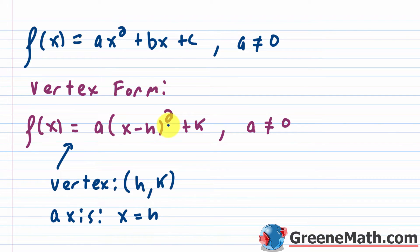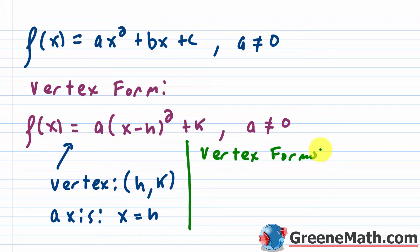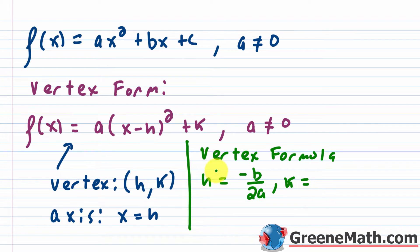Now, how can you go from standard form to vertex form? You can complete the square, but that process is very tedious, so we rely on the vertex formula to do this quickly. With the vertex formula, h is equal to negative b over 2a, and your k is either f of h, or you can say it's c minus b squared over 4a.